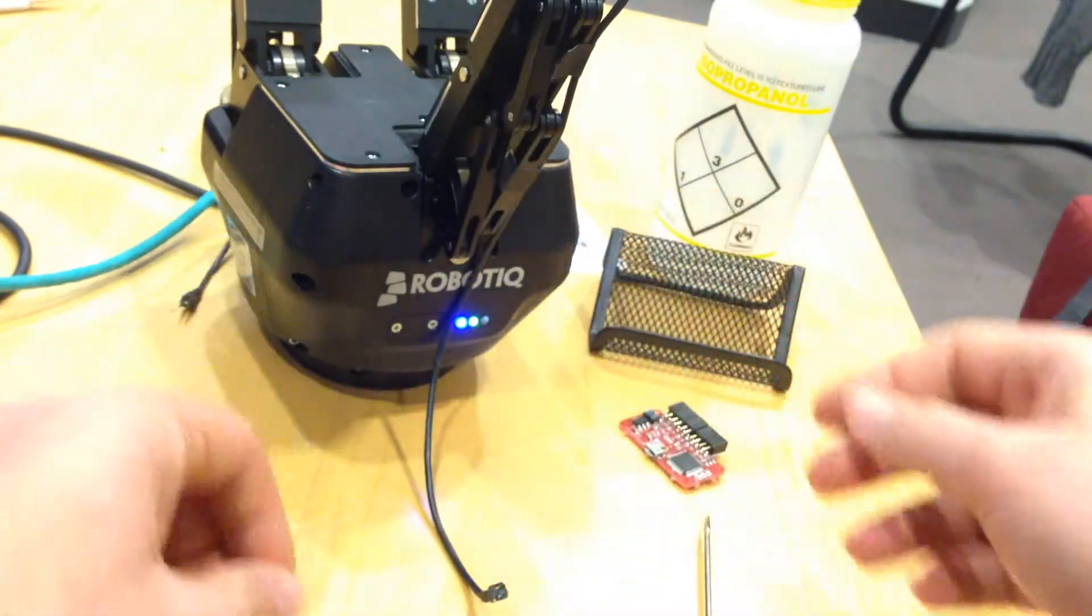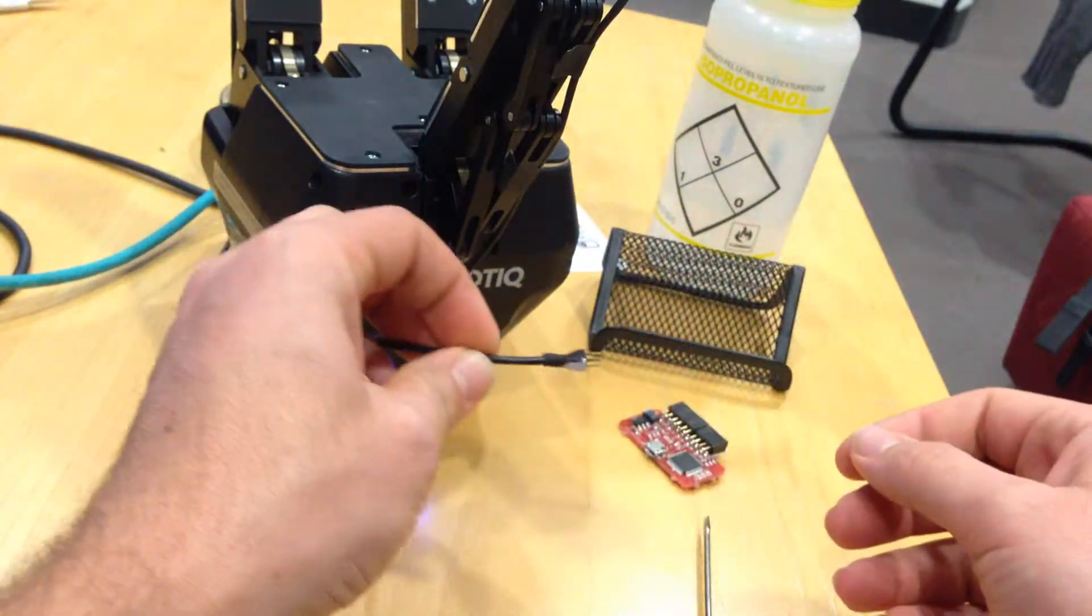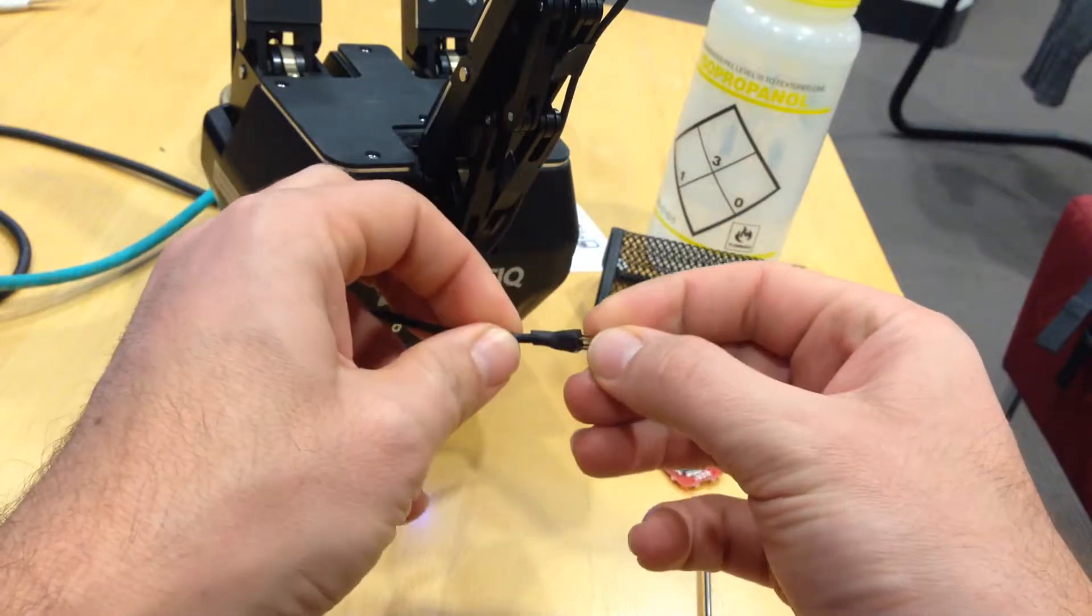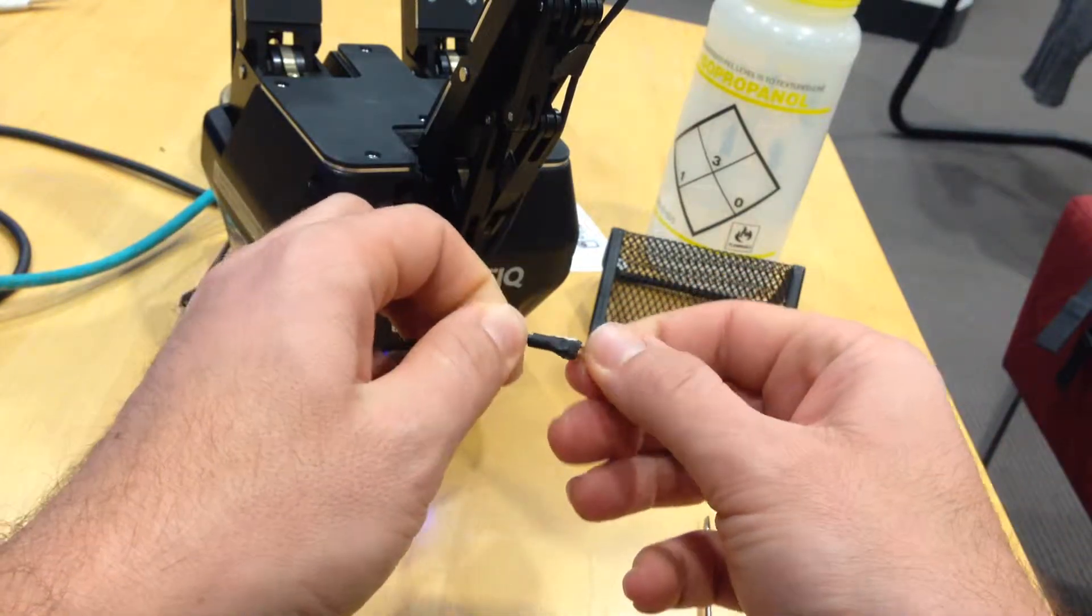The last part of attaching the sensor is the connector. The connector has polarity. There's a white dot on it, a white surface.